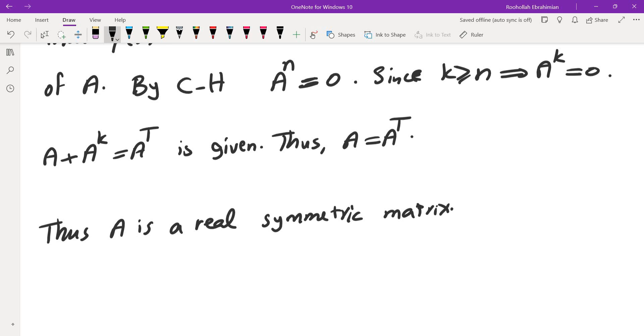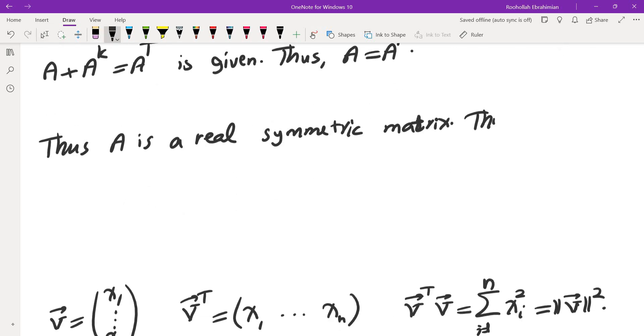Now, a real symmetric matrix, there is a theorem that tells us that real symmetric matrices are diagonalizable. Thus, by a theorem, A is diagonalizable.